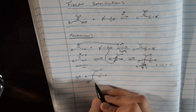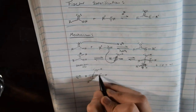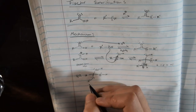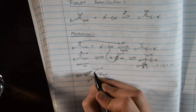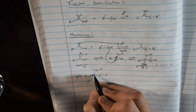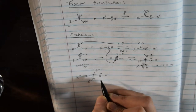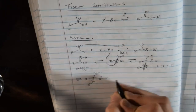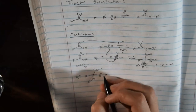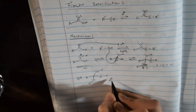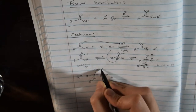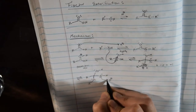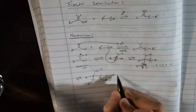Now we have this structure where all three oxygens withdraw electrons from the center carbon, making it slightly electron-poor. These bonds are somewhat weak — not the strongest. Since we're still in acidic conditions, one of the lone pairs on one of the OH groups attacks a proton, an H+, and we get a new structure.